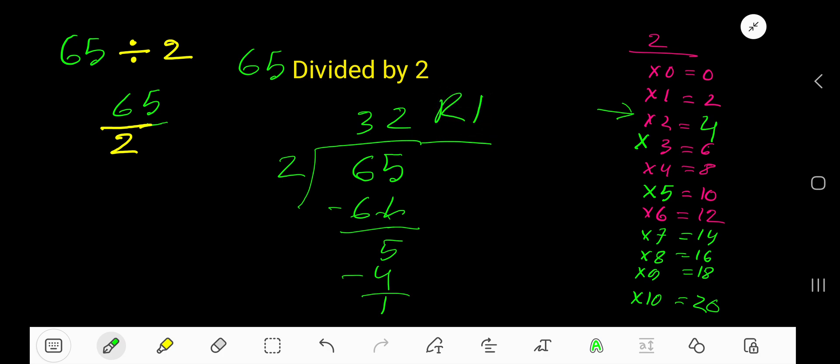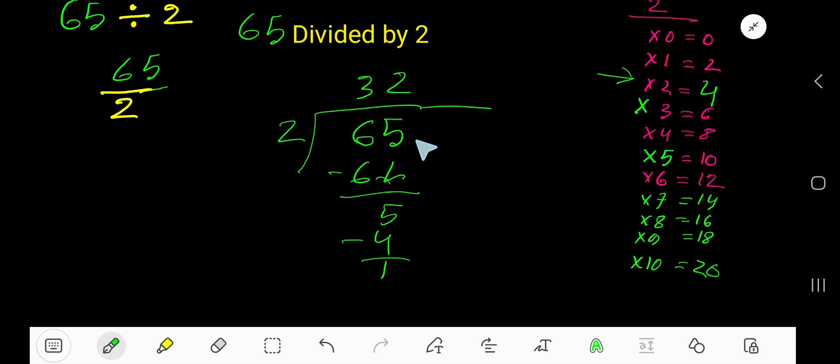So 32, remainder 1 is your answer. But if you want to write your answer in decimal, then you need to consider here a decimal point. Then you are allowed to take any number of zeros.